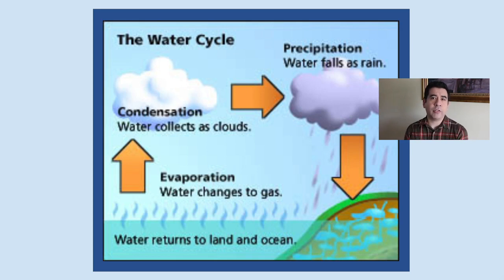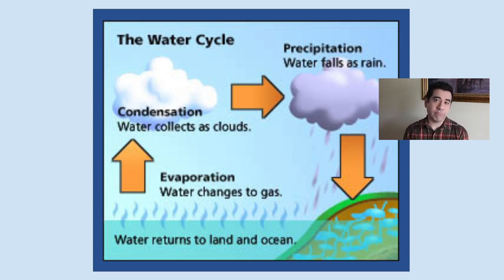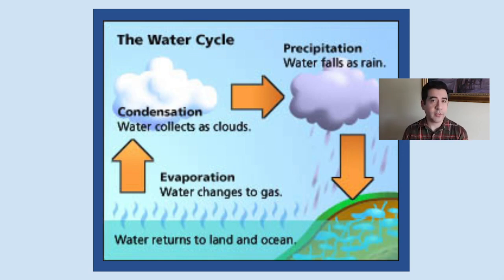Kind of like a sponge, a cloud can only hold so much water before the water starts to come down. And when the water comes down from the clouds, that's known as precipitation, and the cycle goes on and on and on. That's why it's called a cycle.